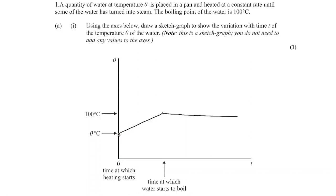When it reaches 100 degrees, this is when it starts boiling. Then the temperature will remain constant because this is when the change of phase happens. So the temperature will remain constant.